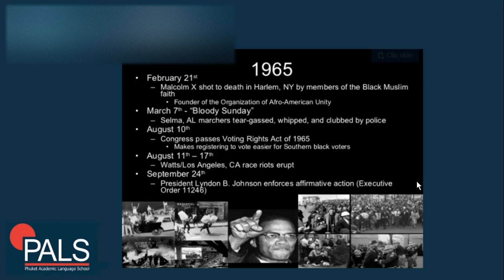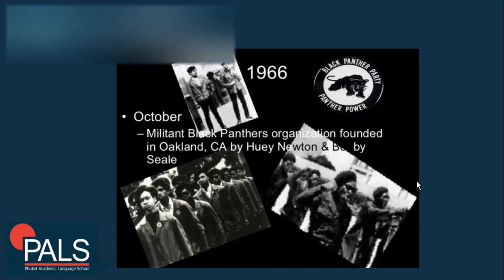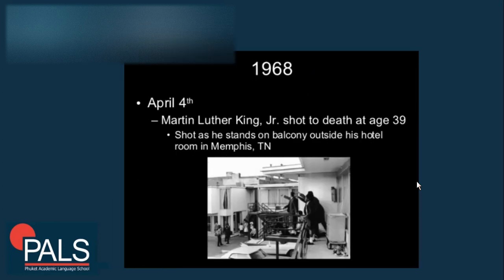From August 11th to 17th, race riots erupted in Watts, Los Angeles. On September 24th, President Lyndon B. Johnson enforced affirmative action through Executive Order 11246. In 1966, in October, the militant Black Panthers organization was founded in Oakland by Huey Newton and Bobby Seale. Then in 1968, on April 4th, Martin Luther King Jr. was shot to death at age 39, as he stood on the balcony outside his hotel room in Memphis.